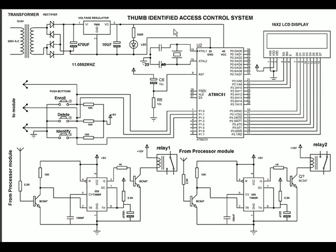Thumb identified access control system. This is a transformer, and there is a bridge rectifier and a regulator IC. This side is unregulated voltage, and we get regulated voltage on this side — fixed voltage of 5 volts.